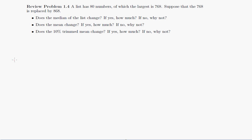So the answer for part A here is that the median does not change. The reason that the median does not change is that if you order the 80 numbers from smallest to largest, then the median would be the average of the 40th and 41st numbers. And so simply changing the largest number to something does not affect the 40th and 41st numbers in the middle of the list, and so there will be no change.